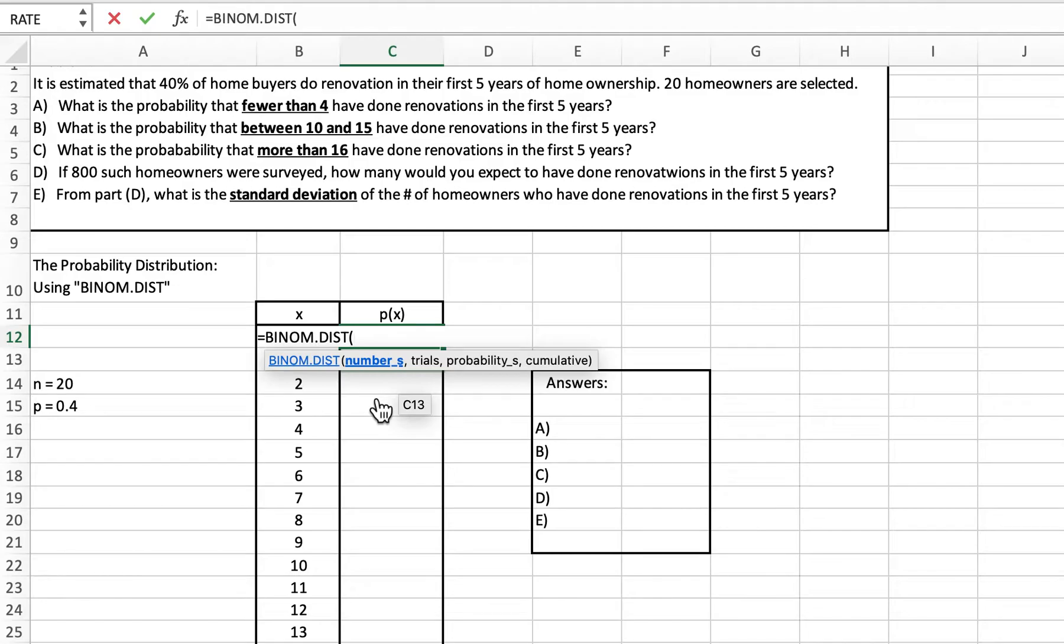As far as the number of trials, I want to reference the column to the left here. In cell B12, the formula is covering it, but there is a zero there to signify zero successes. Since I'm going to fill this formula down, I want to reference the cell rather than the value. Number of trials we already have defined to be 20. The probability of success we already know is 0.4, and it is not cumulative, so we're going to put false.